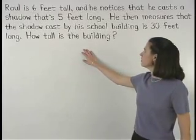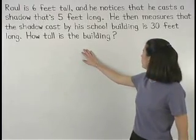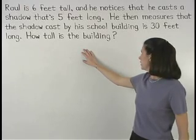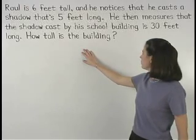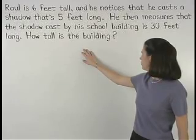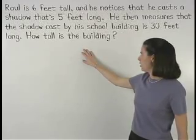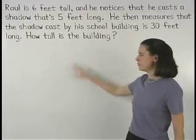Raul is six feet tall and he notices that he casts a shadow that's five feet long. He then measures that the shadow cast by his school building is 30 feet long. How tall is the building?